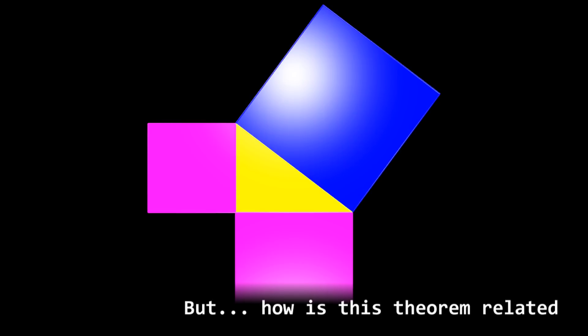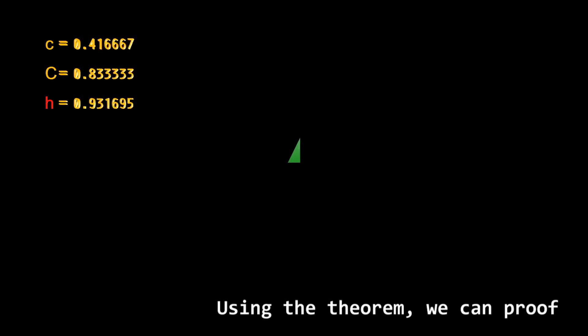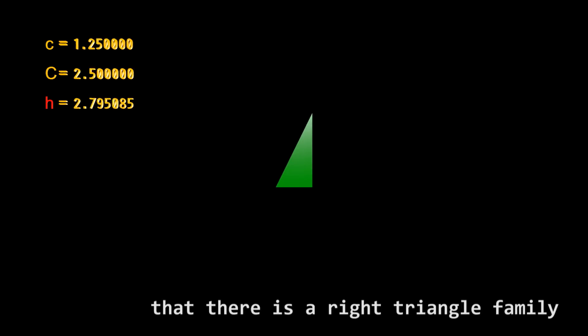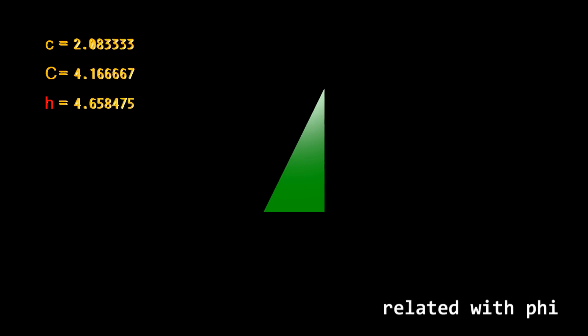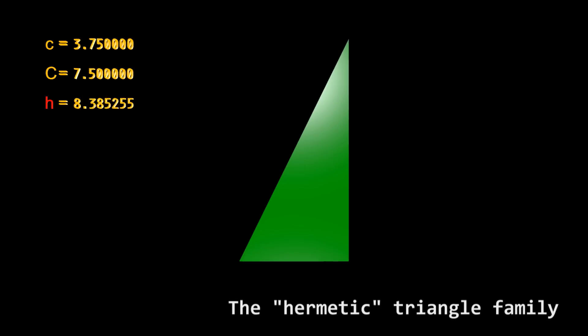But how is this theorem related to the golden ratio phi? Using the theorem, we can prove that there is a right triangle family related with phi. The heimetic triangle family.